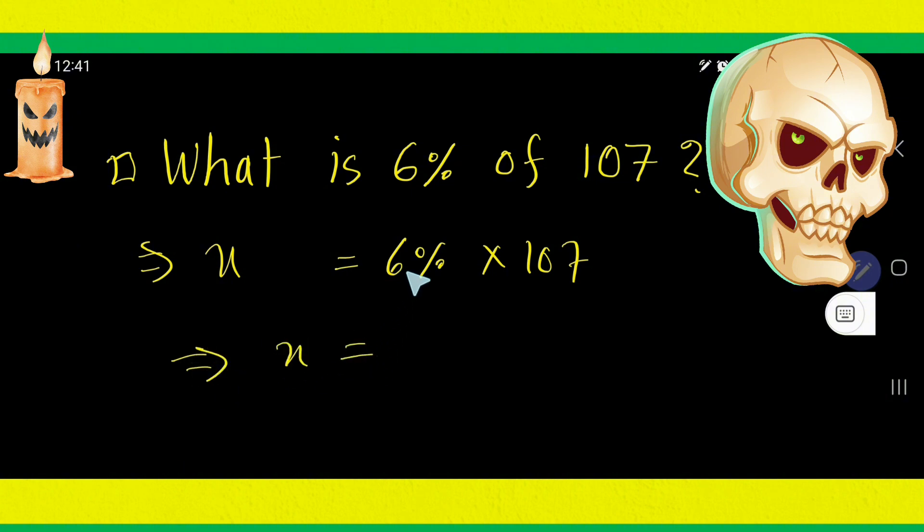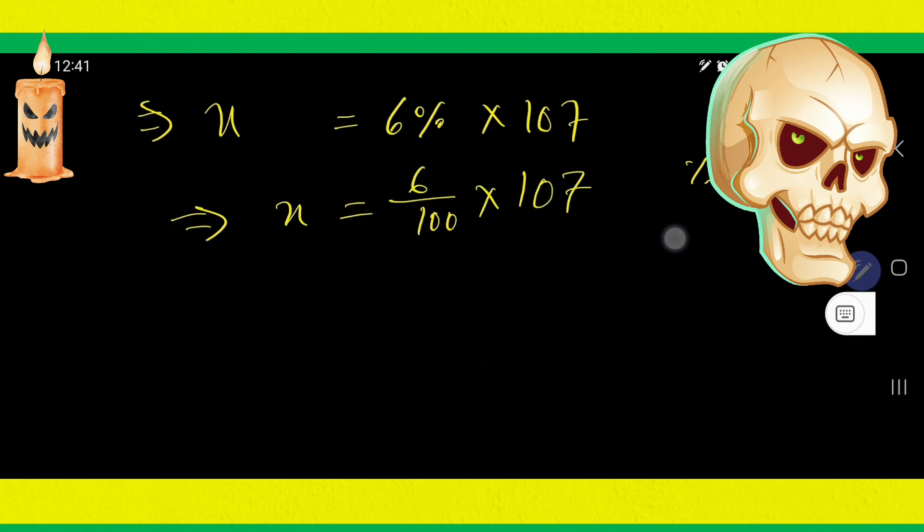Percent means 1 over 100. So, 6 divided by 100 times 107. Right?